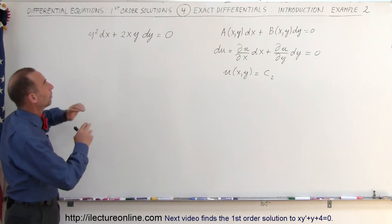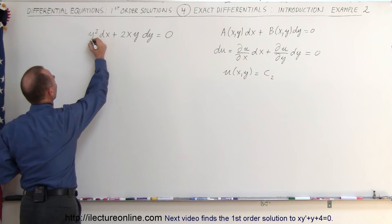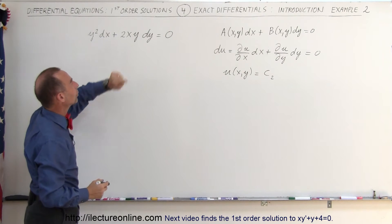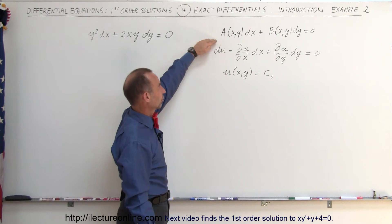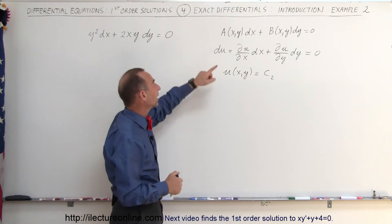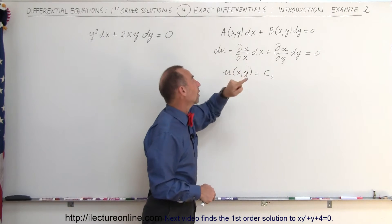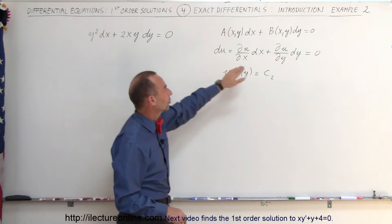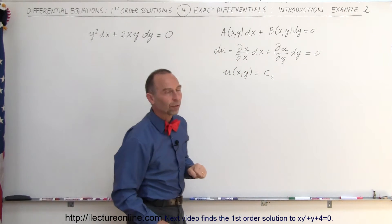We have an exact differential equation of the first order with variable y: y squared dx plus 2xy dy equals 0. This is the general format of exact differentials of the first order. If we have a general solution called u, that means du, the differential of the general solution, should equal the equation. Notice that it's equal to 0, so if du equals 0, then u must equal a constant.